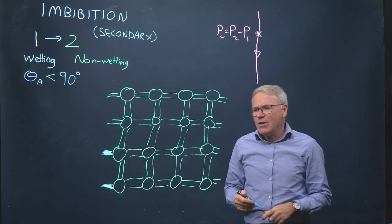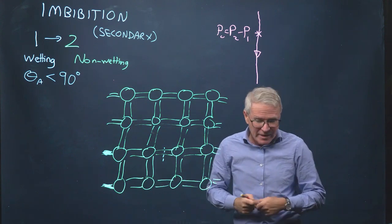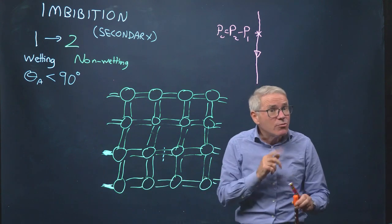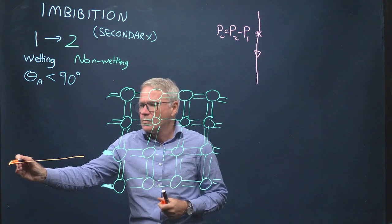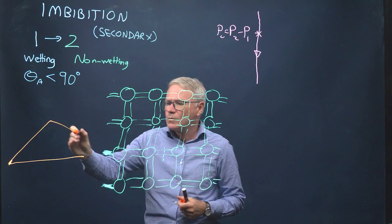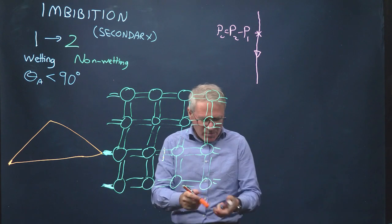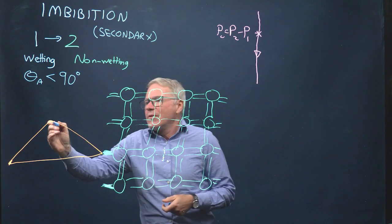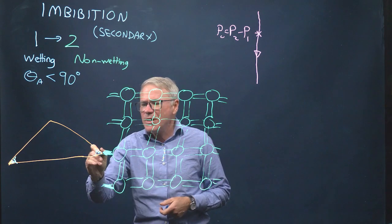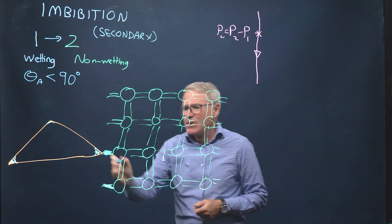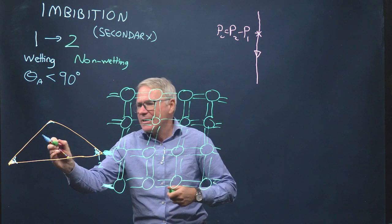But imagine we have here quite a narrow throat. What does that look like in cross-section? In cross-section, we've introduced a very high capillary pressure to begin with — a tiny radius of curvature. It looks like this: phase 1 is in the corners and phase 2 is in the middle.